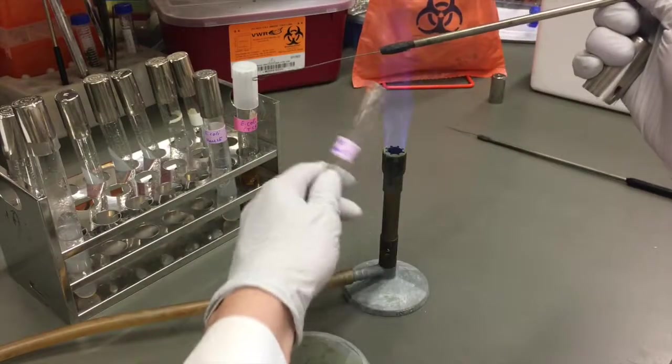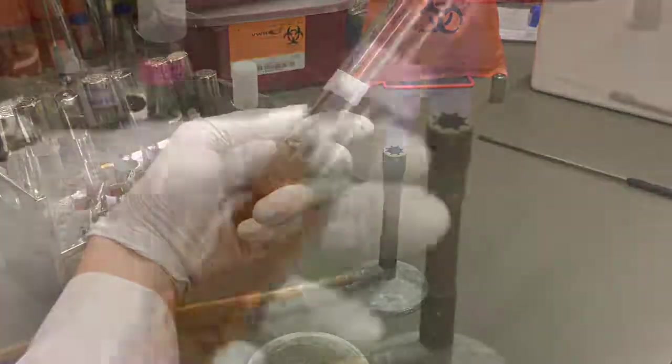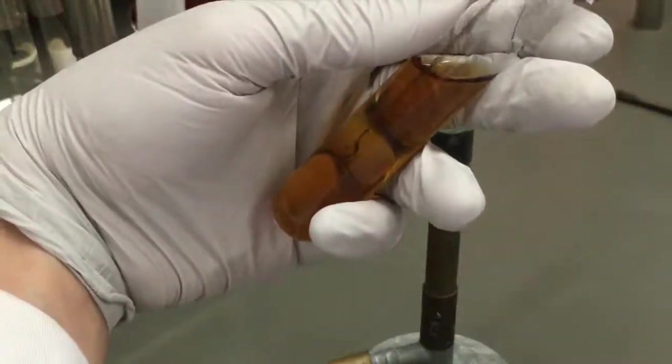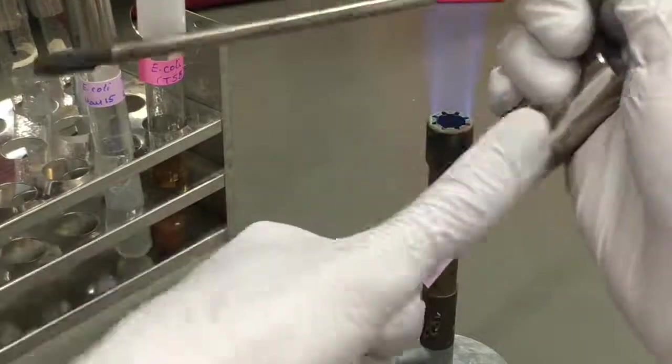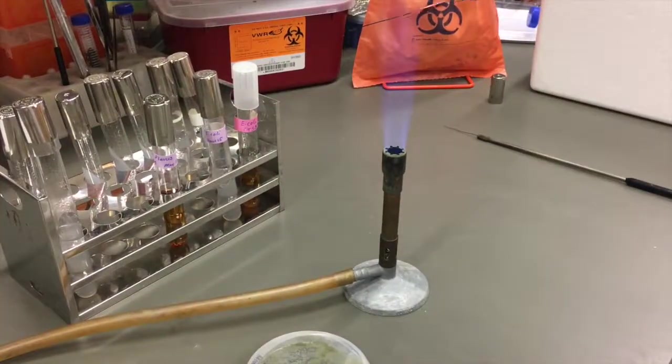Once you have your inoculum simply dip your inoculation loop aseptically into the new broth culture and slightly mix it. Once completed do a final sterilization of your loop.